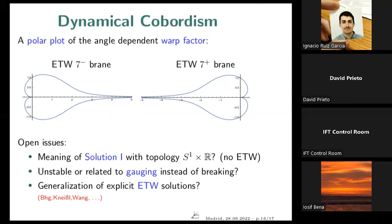There are still open issues. We had two solutions; the other one did not have end-of-the-world branes — it's S^1 cross R, not finite size, so no end-of-the-world brane expected. But there is still a log singularity in the other direction, meaning it does not seem to be a consistent solution. Either it's unstable, or it's related to gauging instead of breaking — this solution cannot be repaired by an end-of-the-world brane but needs to be gauged. This would relate to the two possible realizations: the BPS D8-brane which we expect to be gauged, as opposed to the non-BPS case.